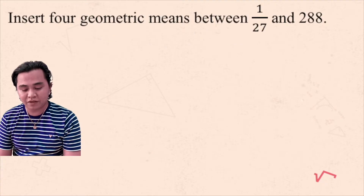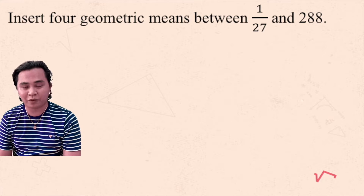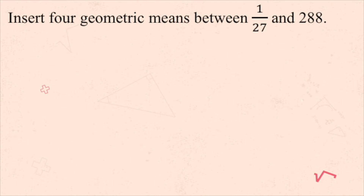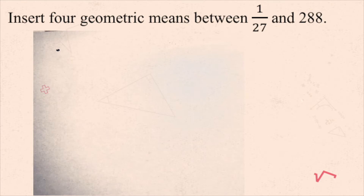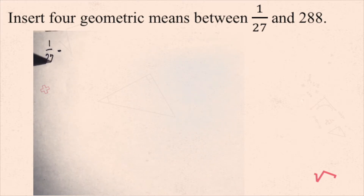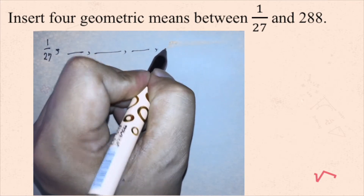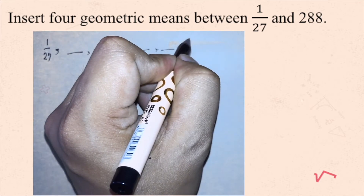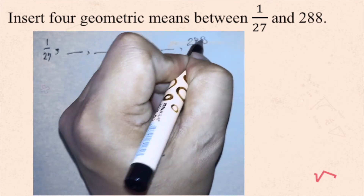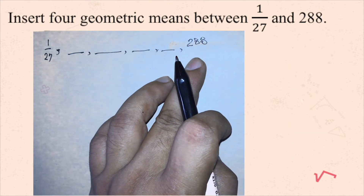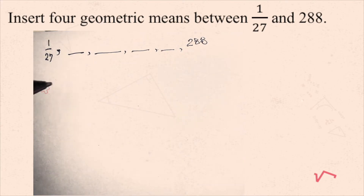Let's have an example: insert four geometric means between 1/27 and 288. To illustrate the problem, we need to find or insert four geometric means between 1/27 and 288. To solve for the geometric means, we're going to find r in the geometric sequence.